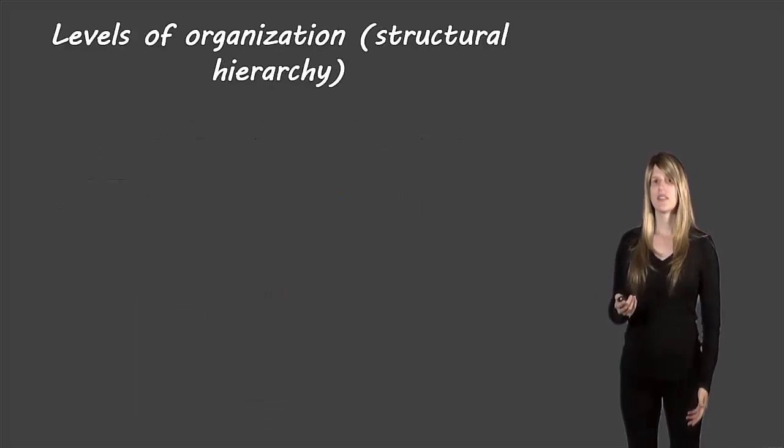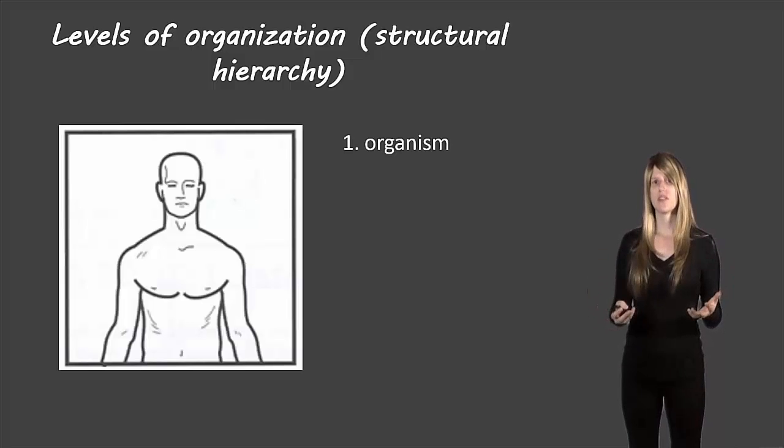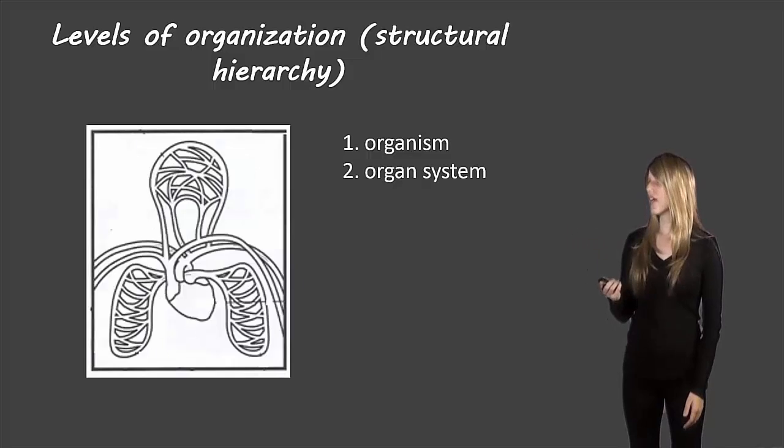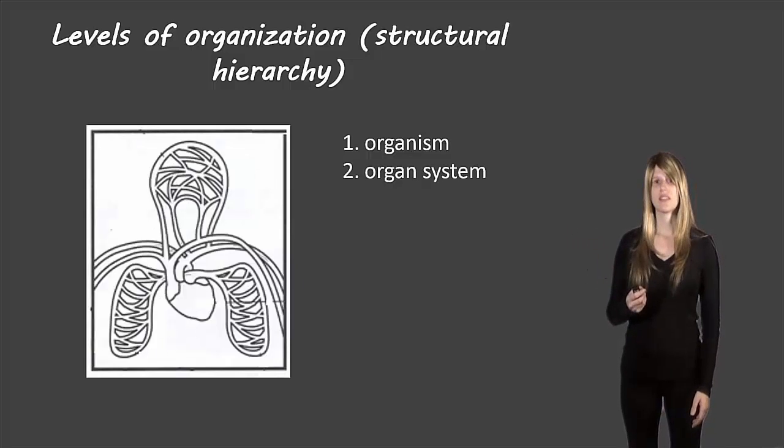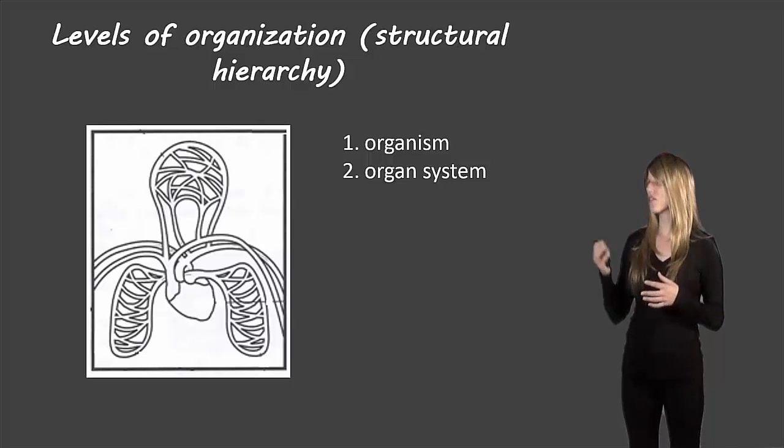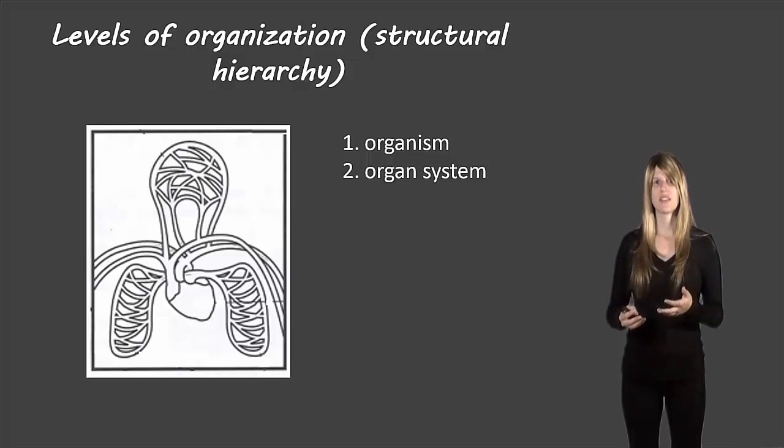Let's look at the levels of organization now. The most complex level of organization is the organism, for example a person. The next level is organ system, that's something that's inside the person and in this case we're looking at the circulatory system. You can see the heart and all the blood vessels going towards the lungs and the head. This is a little bit less complex.